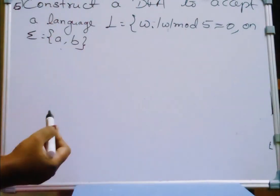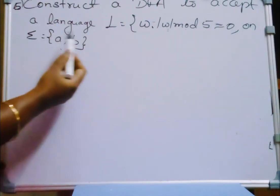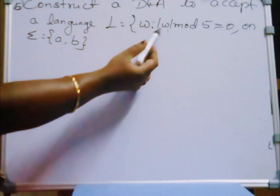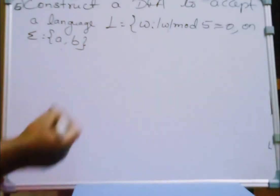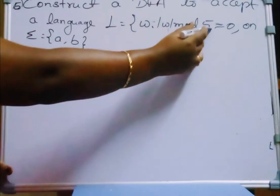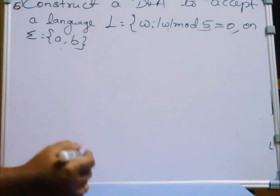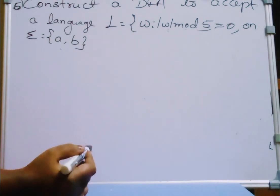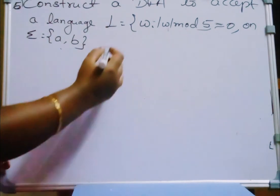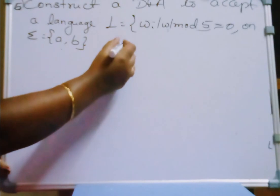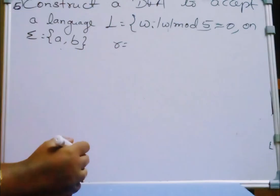Construct a DFA to accept a language L equal to W, where W mod 5 is equal to 0. This is a modulo problem, so we should first identify the number of states of the DFA. The possible remainders of 5 will determine the number of states.